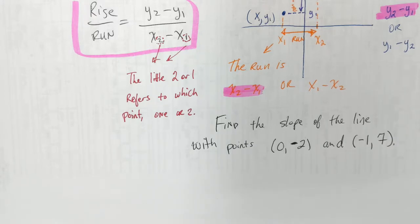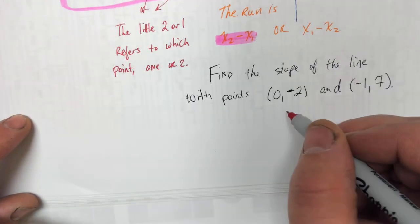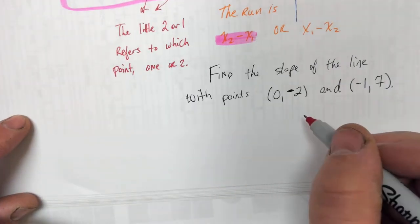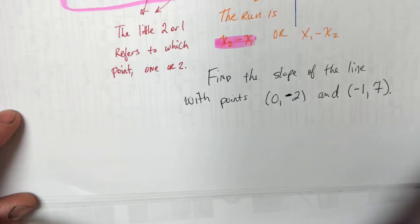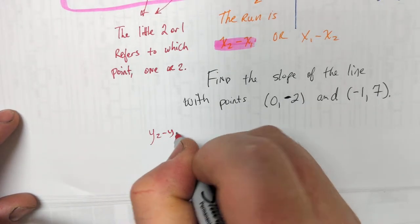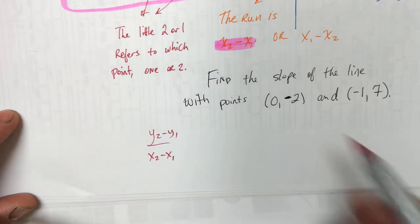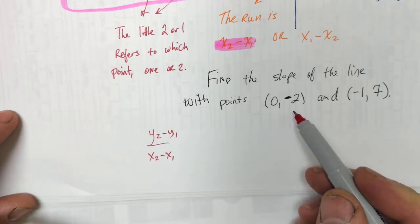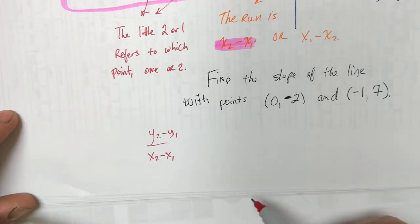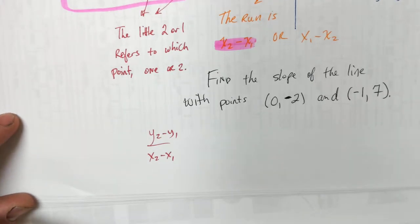We're going to do it both ways — pick both ways. If you pick this to be number 1, we'll do the math. Then we'll say, what if you pick this to be number 1, and do the math again. You'll see you get the same answer.